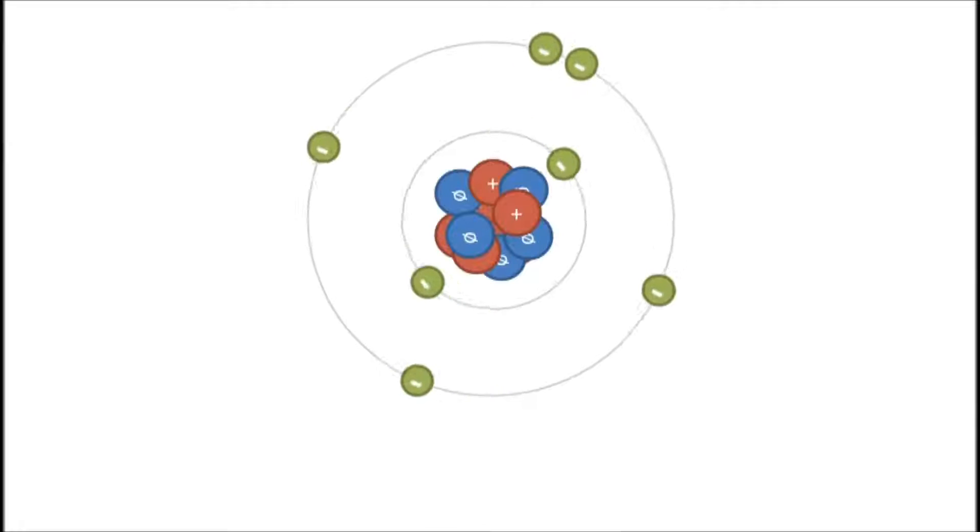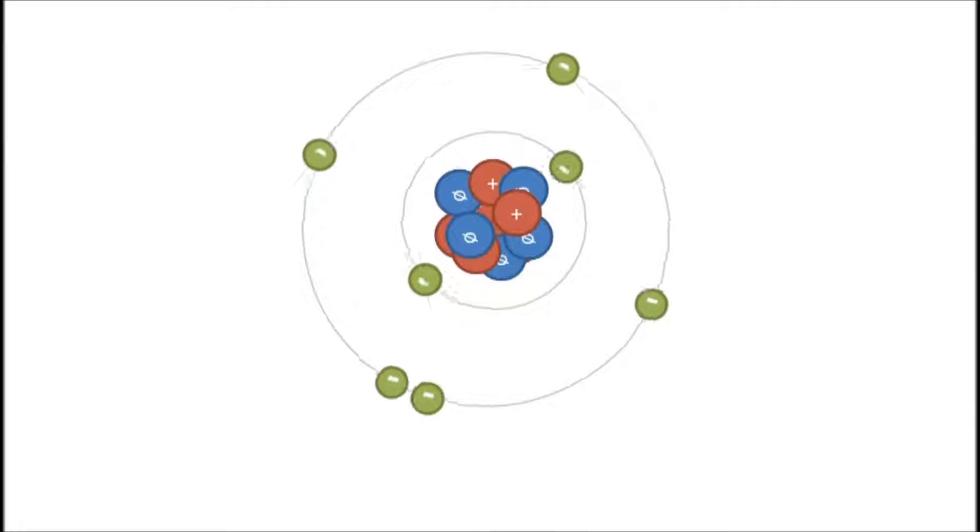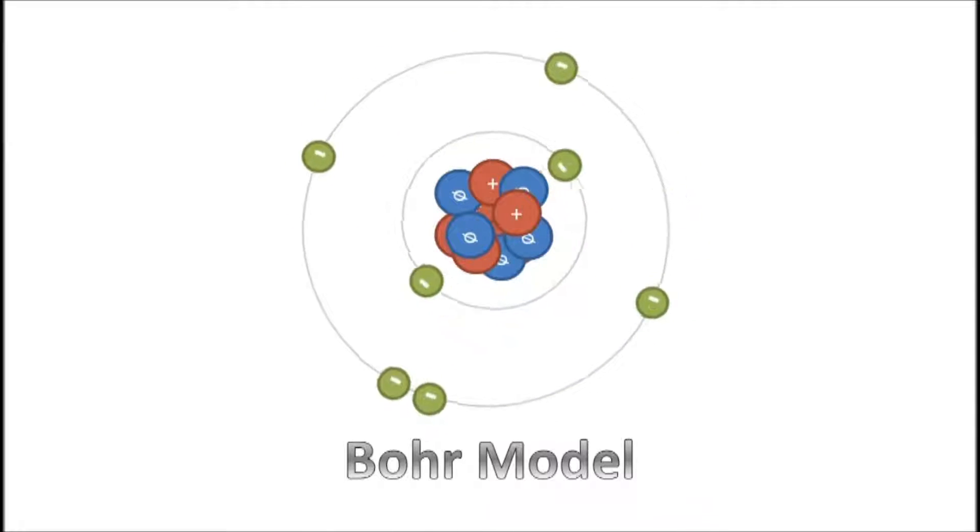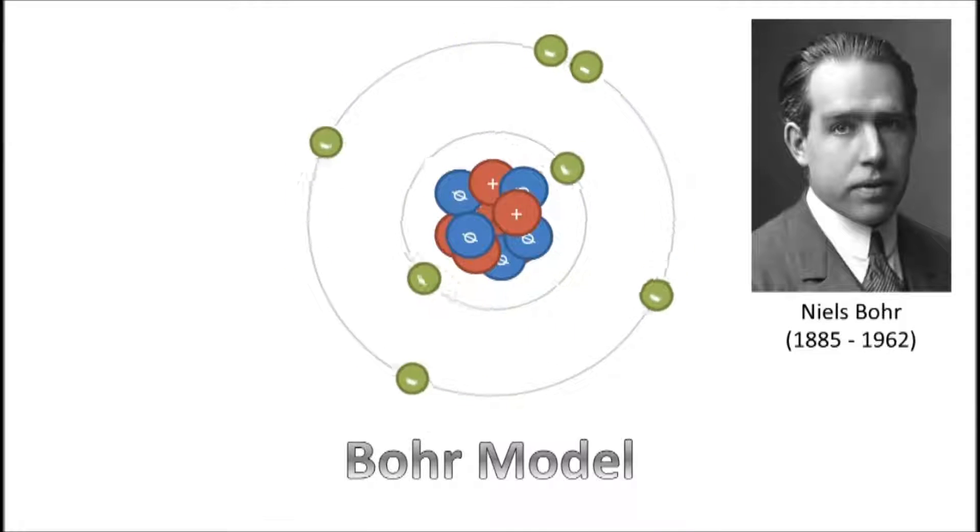In my previous videos, I drew atoms to look like this, electrons orbiting the nucleus in concentric circles. This is the Bohr model, developed by Niels Bohr in 1930.